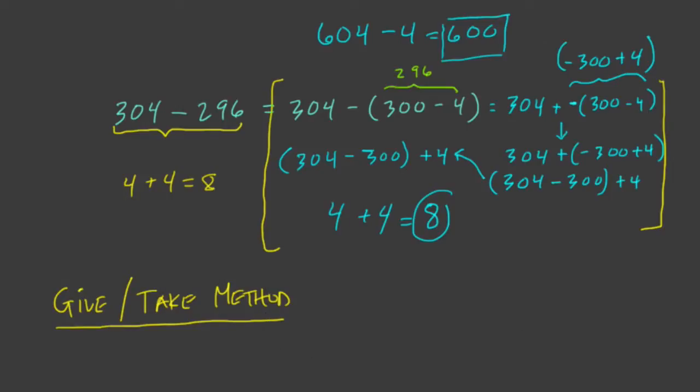What I mean is, the problem we've been looking at in all of these is 304 plus or minus 296. Well, the give and take method would be to take both of these numbers and round them out in a way that makes the problem easier to work with. With addition, this is particularly valuable.